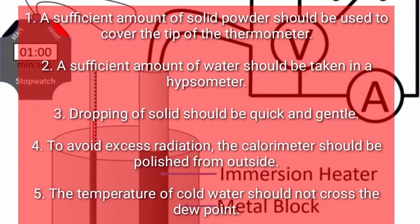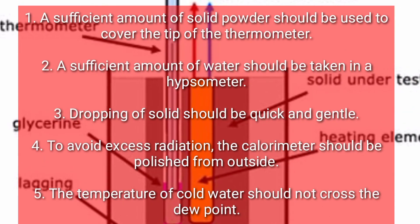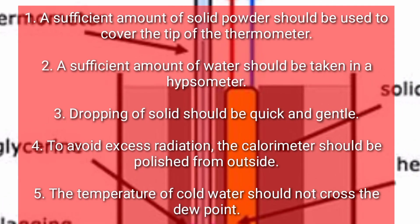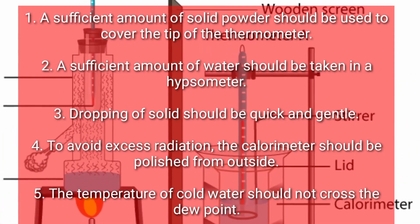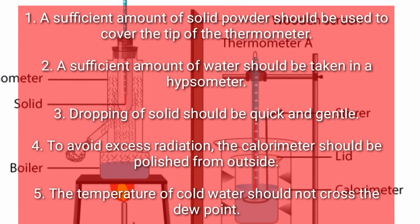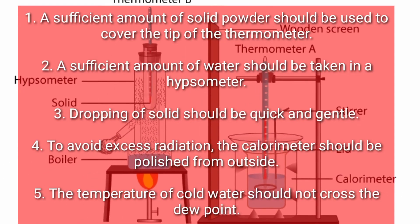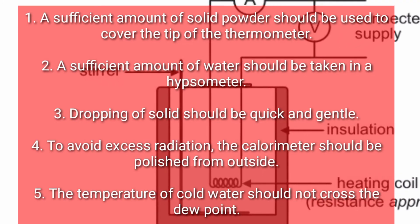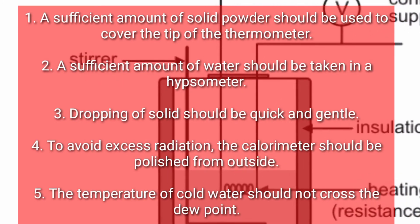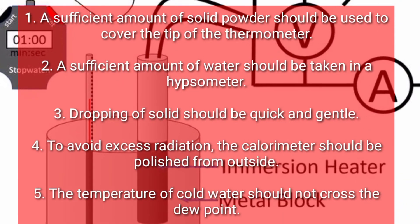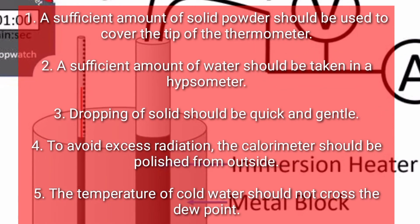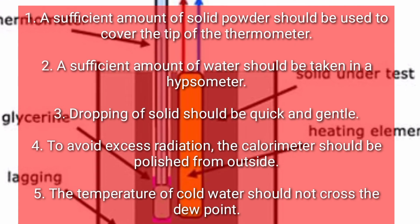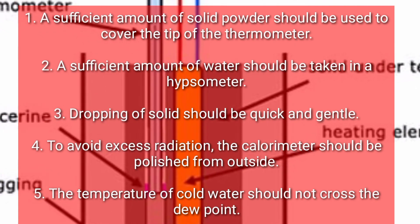1. A sufficient amount of solid powder should be used to cover the tip of the thermometer. 2. A sufficient amount of water should be taken in a hypsometer. 3. Dropping of the solid should be quick and gentle. 4. To avoid excess radiation, the calorimeter should be polished on the outside. 5. The temperature of cold water should not cross the dew point.